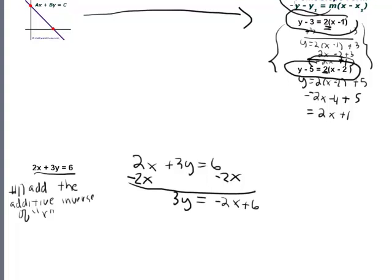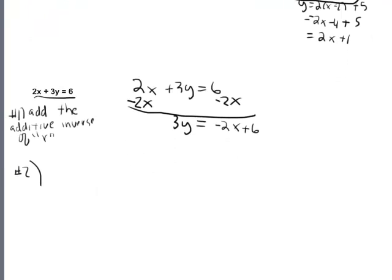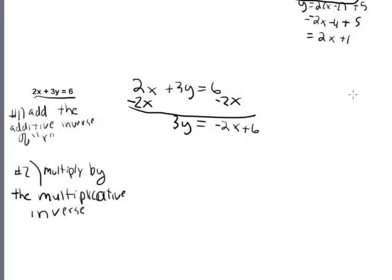Notice in point slope form the coefficient in front of y is 1. So in step number 2, we need to make the coefficient in front of y equal to 1 instead of 3. We can do that by multiplying by the multiplicative inverse. Just a quick refresher: if you have the number 2, its multiplicative inverse is 1/2, because when you multiply these together you get 1. If the number was 2/3, it would be 3/2. Because again, you get 1.